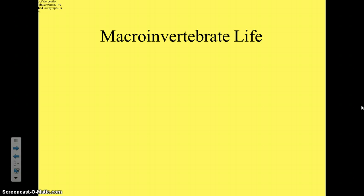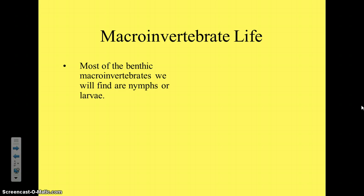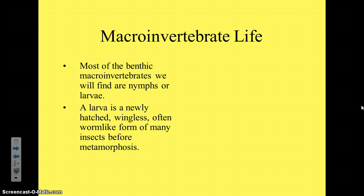I need to give you some background information about the life of a macroinvertebrate. Most benthics that we find will be either nymphs or larvae. A larva is a newly hatched, wingless, often worm-like insect — basically what it looks like as a baby, right out of the egg. The most famous larva you probably know is a caterpillar. It comes out of the egg looking like a worm, crawls around, eats leaves, then goes through a cocoon stage — a metamorphosis — and suddenly it looks totally different: it has wings, it's beautiful, it flies around and drinks nectar from flowers.